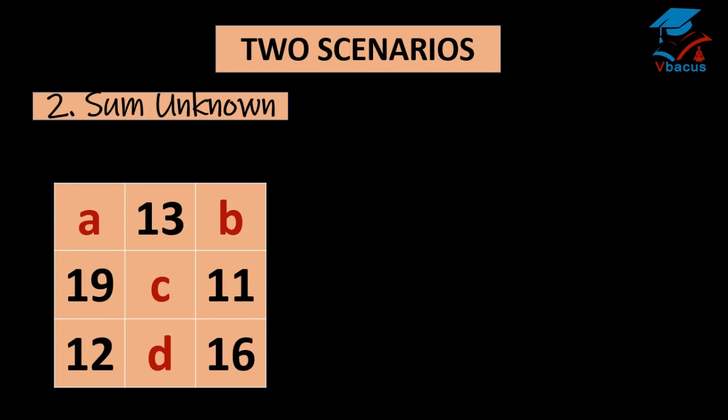Here the sum is not given and sum is unknown. Only 19, 12, 13, 11, 16 are given. And we have to find the value of A, B, C, D. As we know, the sum of columns and rows and diagonals are same. So let us try with that method.